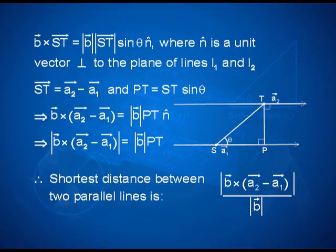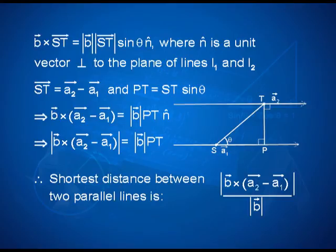Therefore, the shortest distance PT equals the magnitude of b cross (A2 minus A1) divided by the magnitude of vector b. So if the two parallel lines are given, knowing vector b, A1, and A2, we can use this formula to find the shortest distance between them.